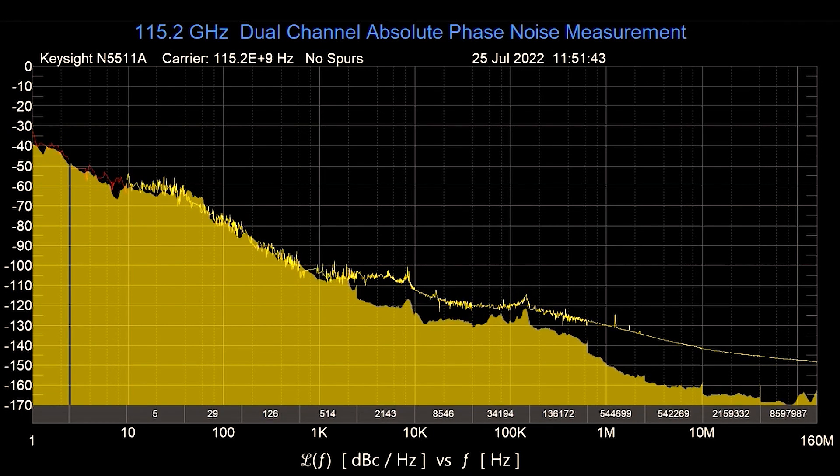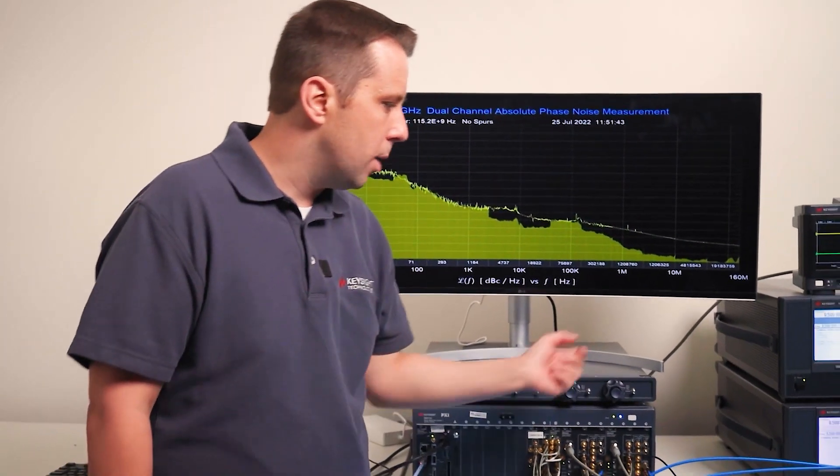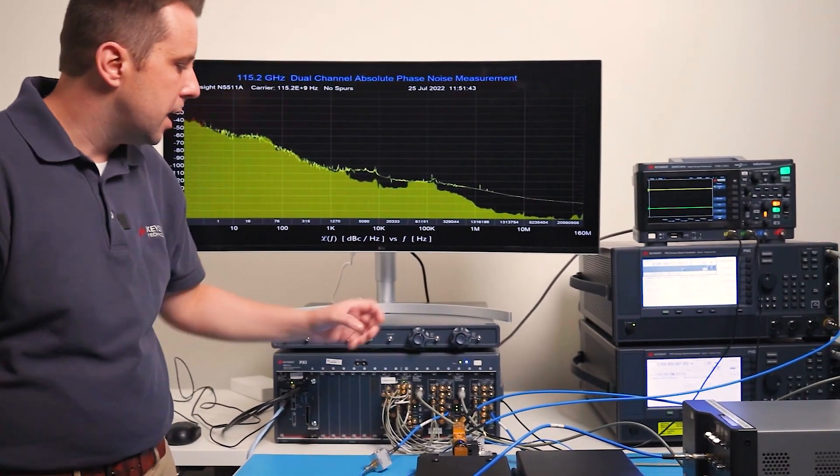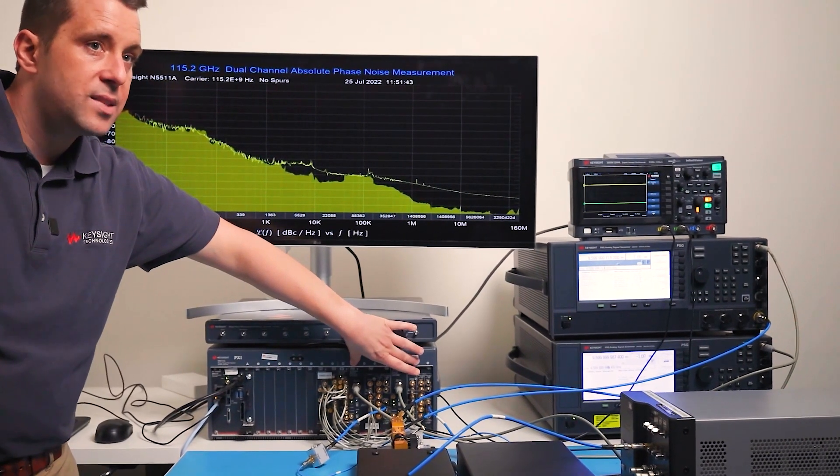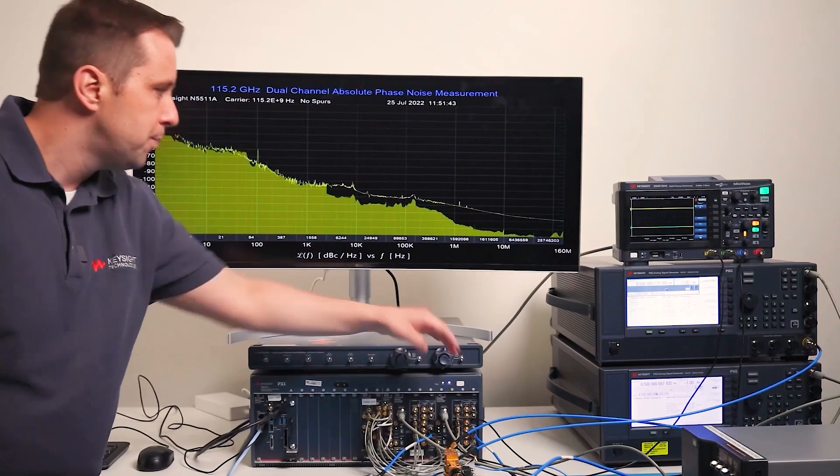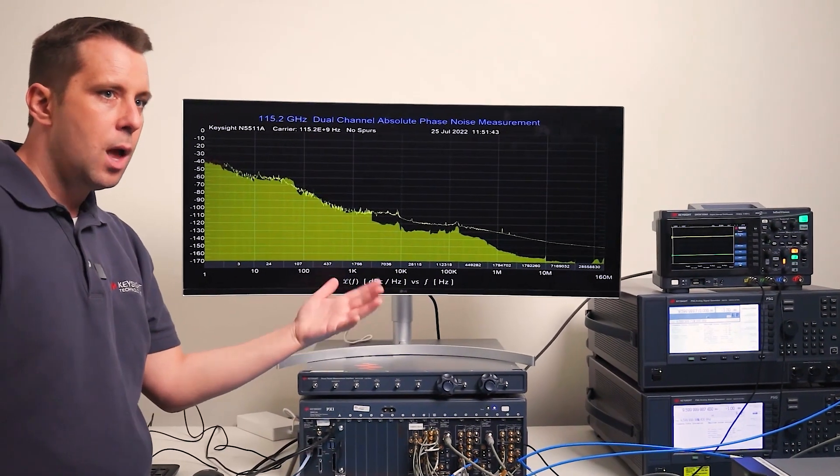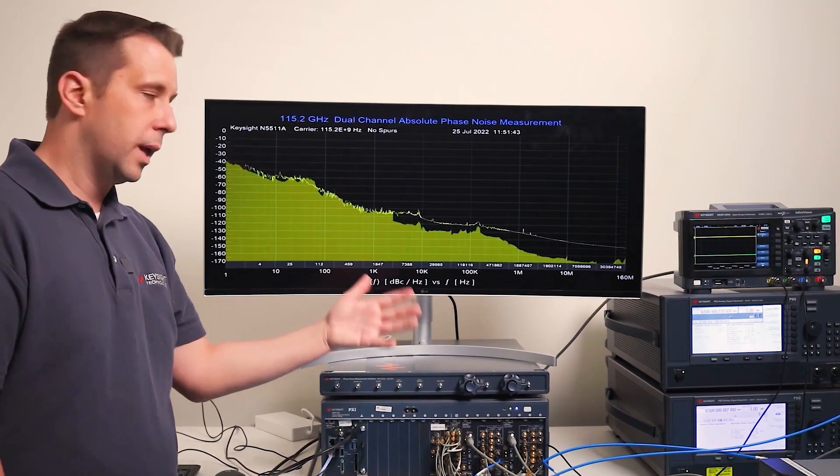That represents the uncorrelated noise in the system. The uncorrelated noise is coming from the LOs as well as any uncorrelated noise from the phase detector modules themselves, which is primarily from the LNAs. With cross correlation or cross spectral averaging we can remove that uncorrelated noise.